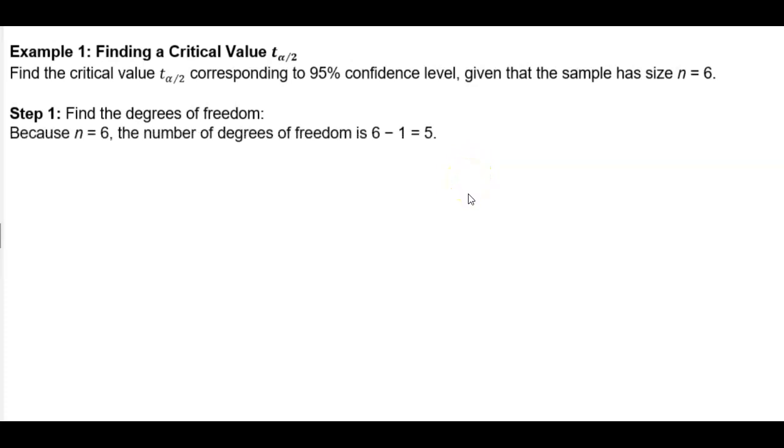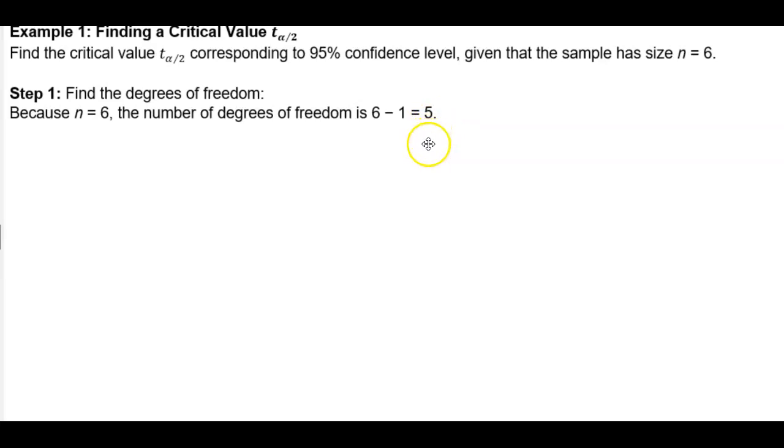The first thing we need to do is find the degrees of freedom. Because n is equal to 6, the number of degrees of freedom is 6 minus 1. The degrees of freedom is equal to n minus 1, therefore the degrees of freedom is 5.